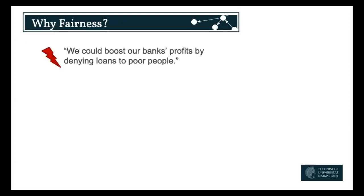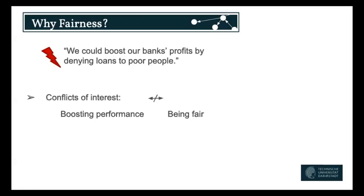There's an inherent conflict of interest here, because basically we could boost bank profits by denying loans to poor people, since they may be less likely to pay them back. So it's not that we can achieve both fairness and maximum profit simultaneously — we have to make a conscious decision to be fair, because just optimizing for accuracy won't give us fair models.